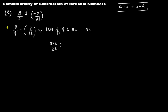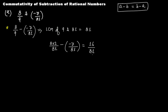The second term becomes minus (−7/81). Since the denominator is already 81, there is no need to change it — the denominators are the same. So the numerator stays as −7, and 8 times 2 gives us 16. So we have 16/81 minus (−7/81).